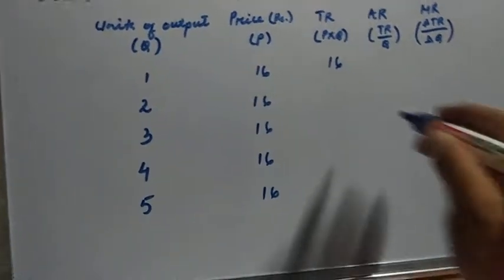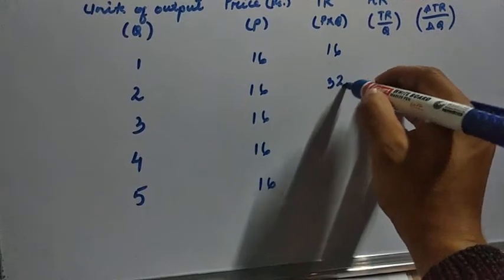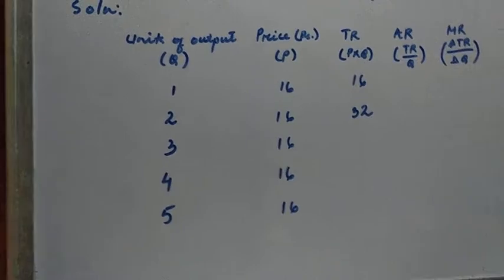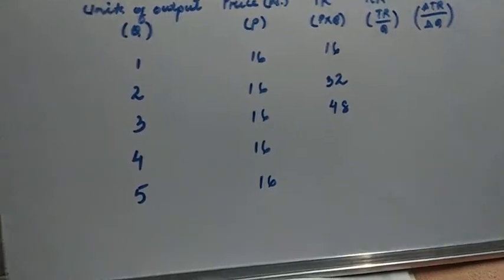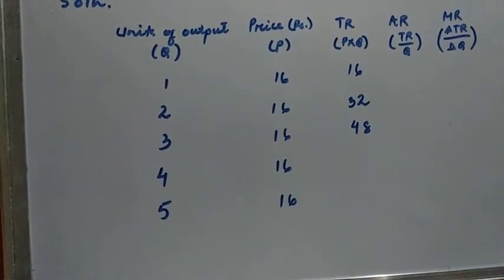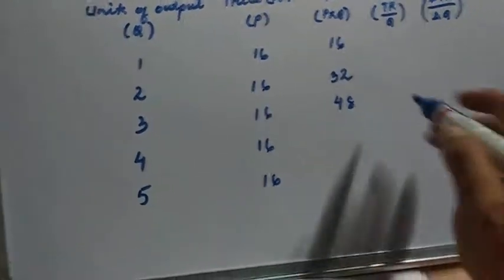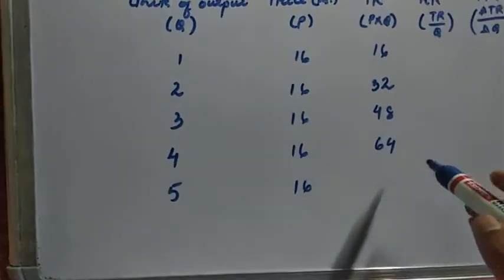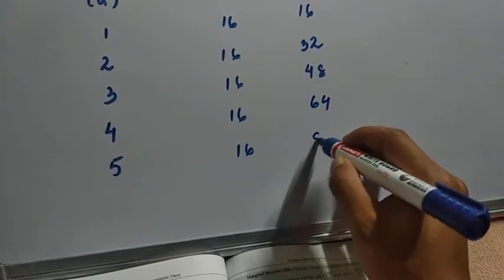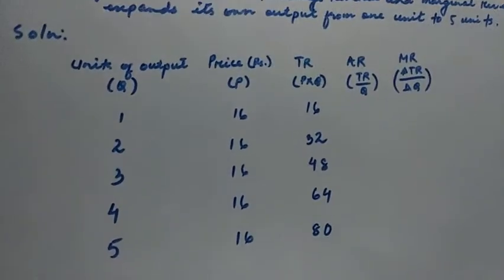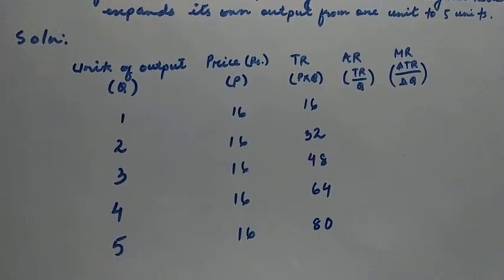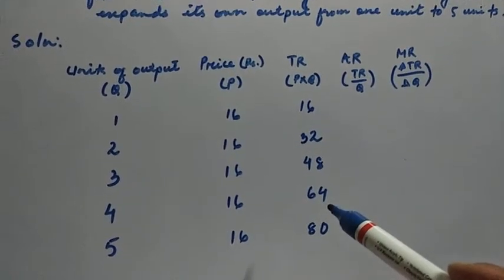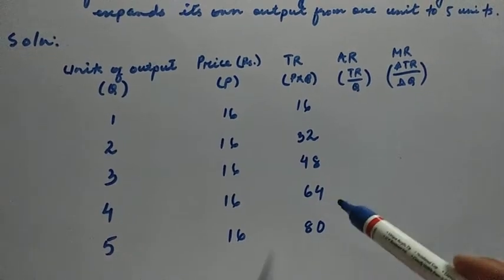Continuing the total revenue calculations: 2 into 16 is 32, 3 into 16 is 48, 4 into 16 is 64, and 5 into 16 is 80. We have now found out the total revenue of the firm given the units of output and the price.